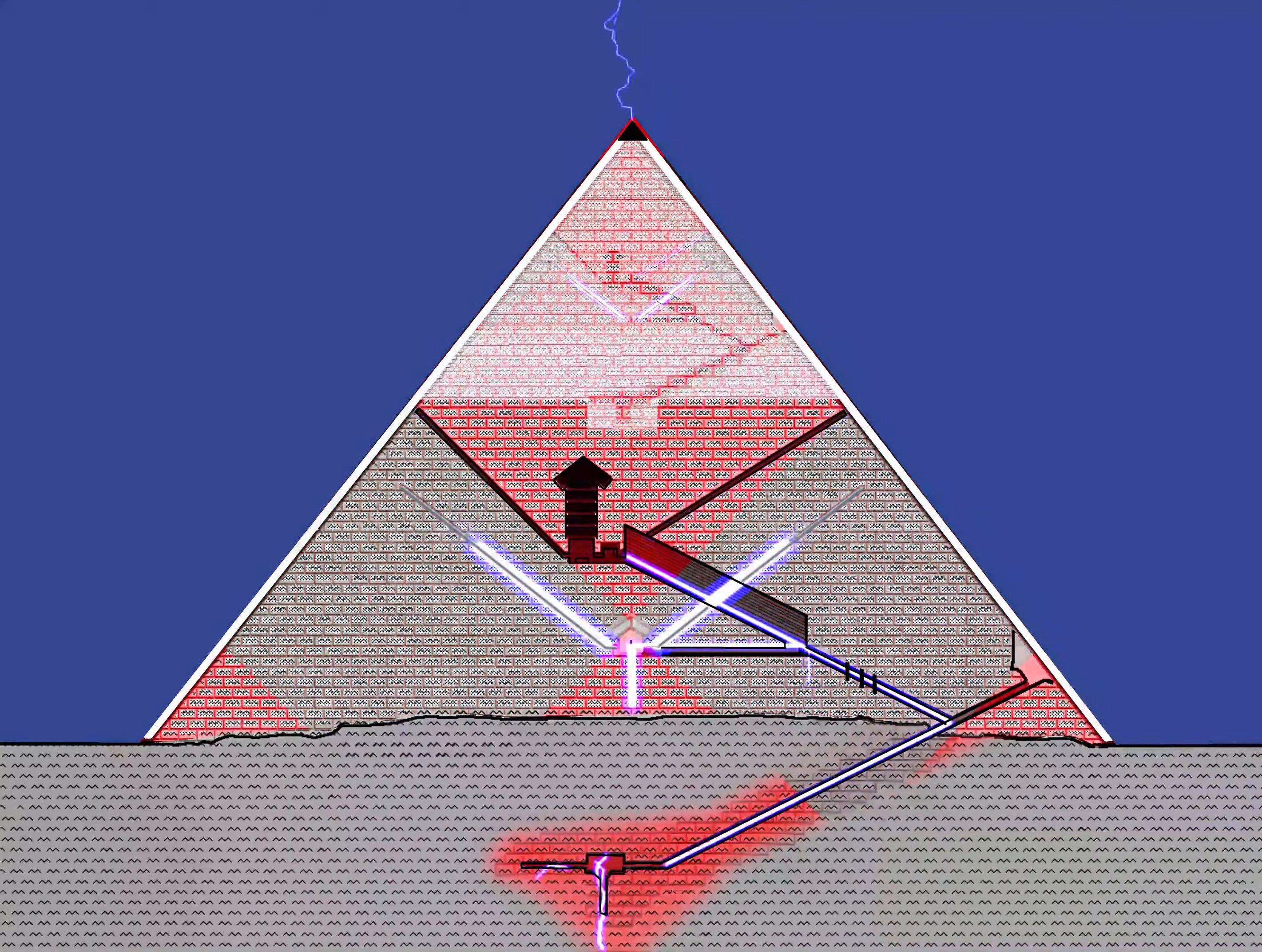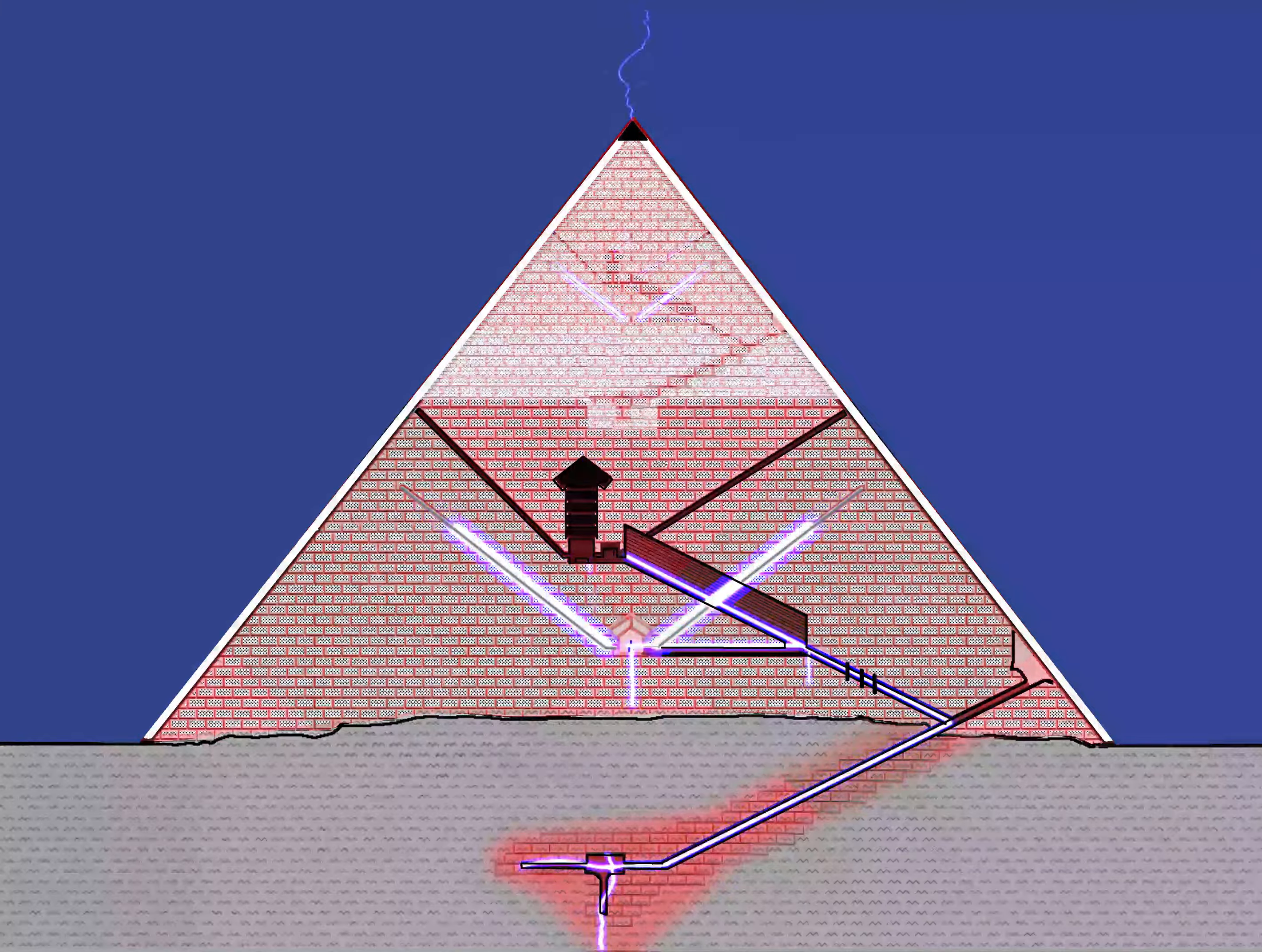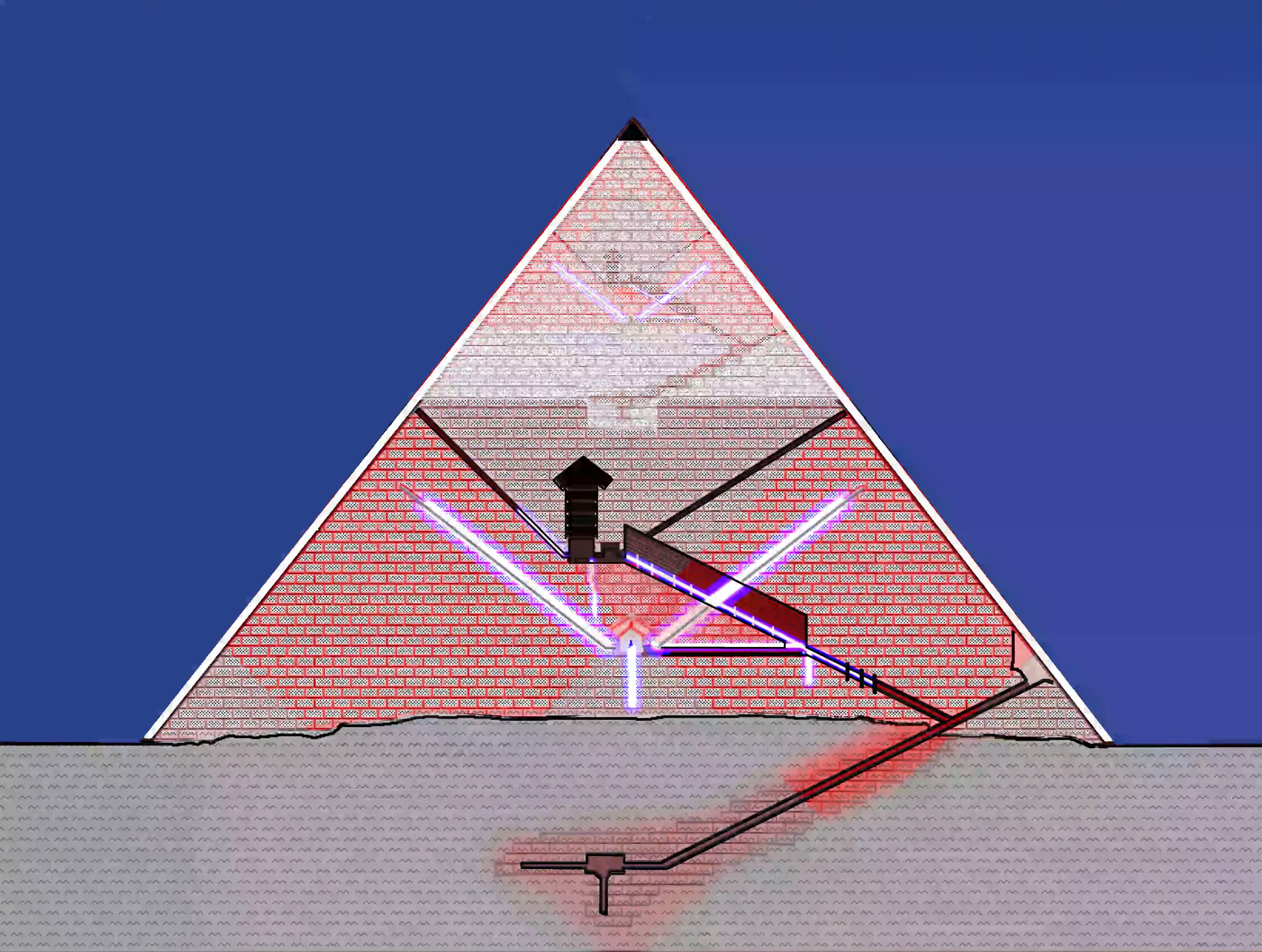In the tunnel connecting the Grand Gallery and the descending tunnel, three ring blocks are installed, providing isolation for direct current between the Earth and the central part of the pyramid.